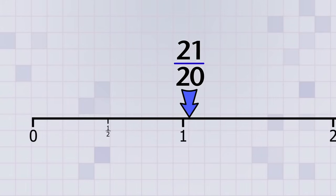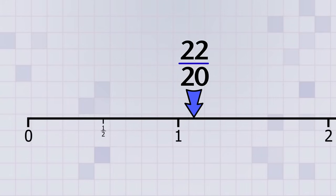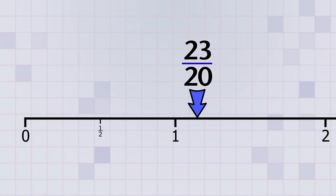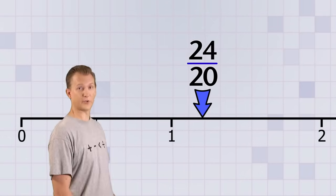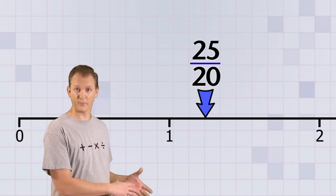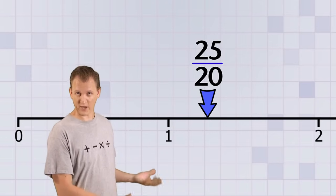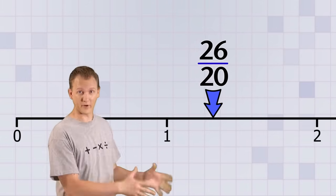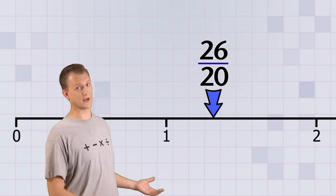We've passed 1 now, but we're still going, and our top number is now bigger than our bottom number, which means we have an improper fraction. You can see that the bigger the top number gets, the bigger the value of the fraction, and we could keep on going forever.